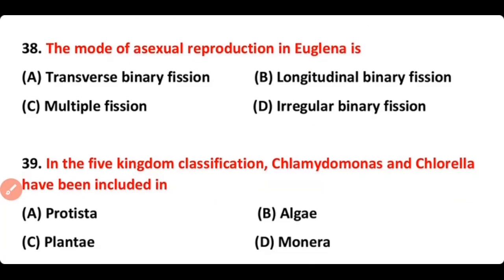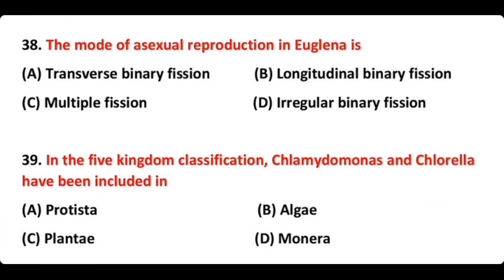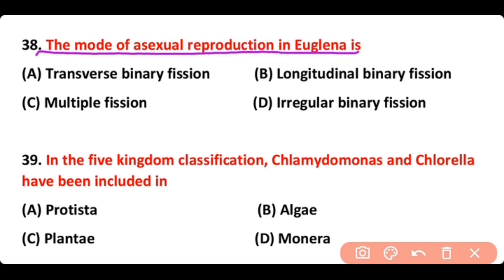Question number 38: The mode of asexual reproduction in Euglena is — transverse binary fission, longitudinal binary fission, multiple fission, or irregular binary fission? The correct answer is option B. Longitudinal binary fission is present in Euglena.